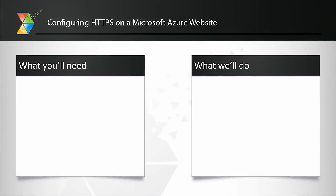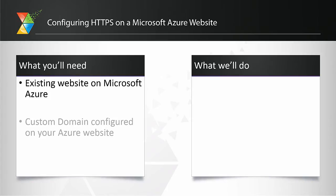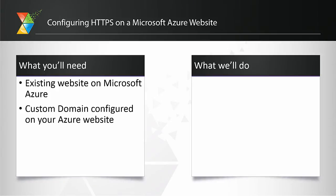Before we get started, let's talk about what you'll need to bring to this. First, you'll want to have an existing website on Microsoft Azure — if you need help setting that up, please take a look at our previous video on creating and publishing a site to Azure. Second, you'll need your custom domain configured for your Azure website, because in order to use your own custom SSL you need your own domain name assigned to your Azure website.